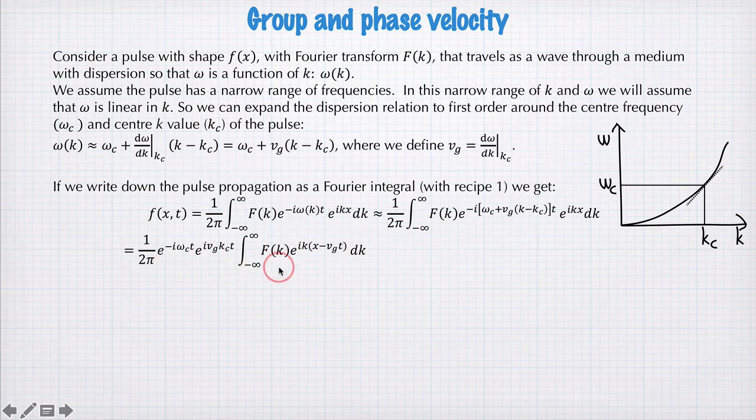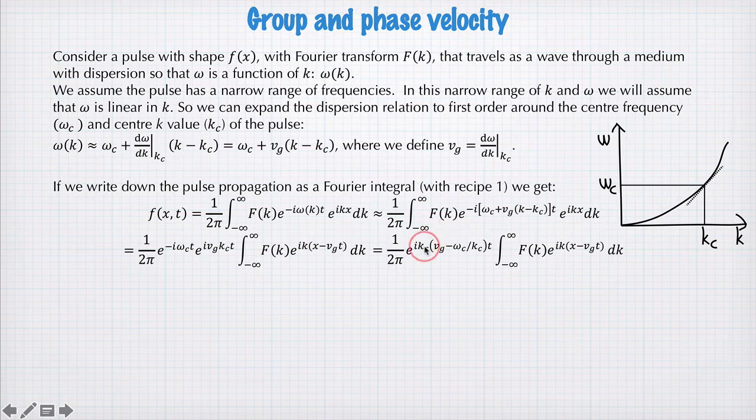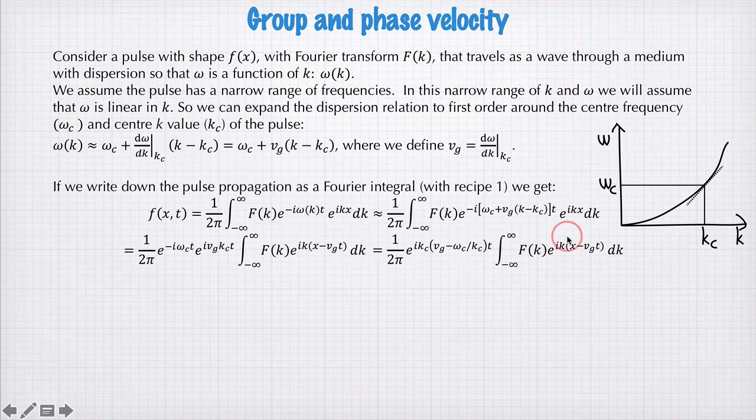So these terms don't depend on k, and these terms do. We can simplify it a little by rewriting this exponential out the front as a single exponential like this, taking out a factor of kc. And then we get a group velocity minus omega c divided by kc, and this integral here.